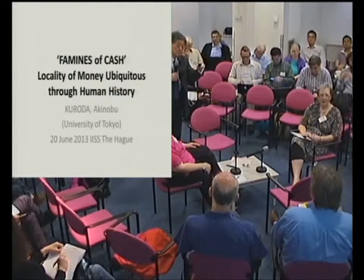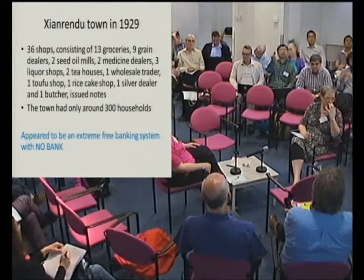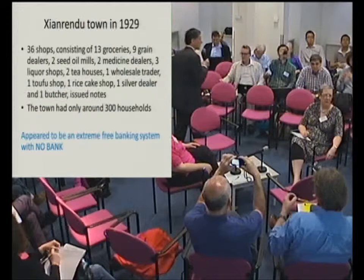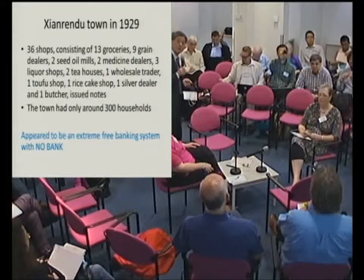This actually happened in 1929 in a town in China. This town had 300 households. But 36 shops independently issued their own notes — grocery, grain dealers, and so on. All kinds of shops issued their own notes, but people mixed and exchanged them, and continued their trade without any problem.